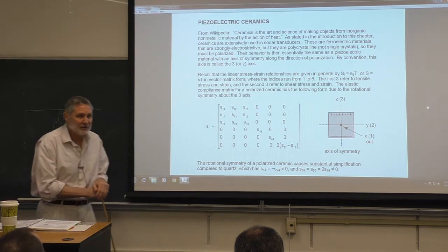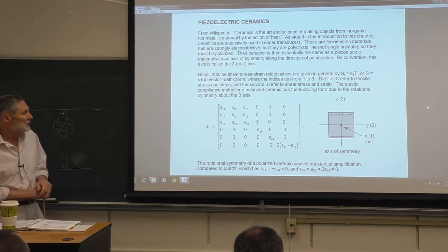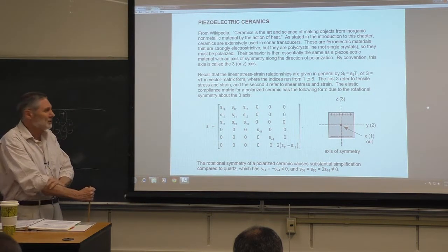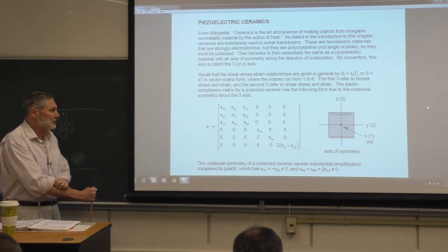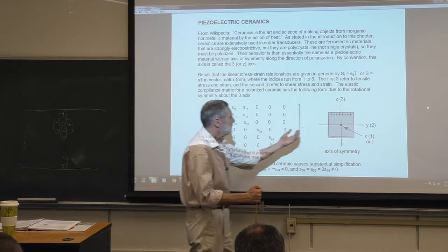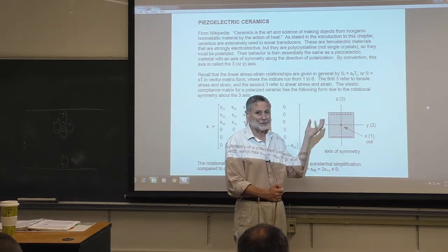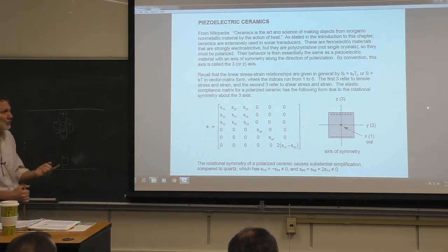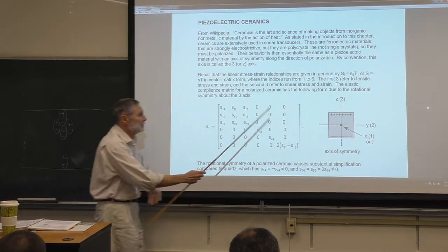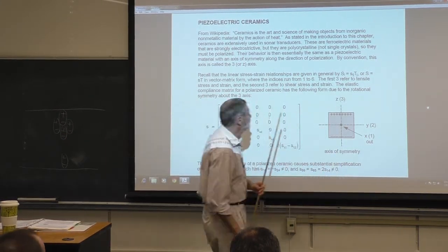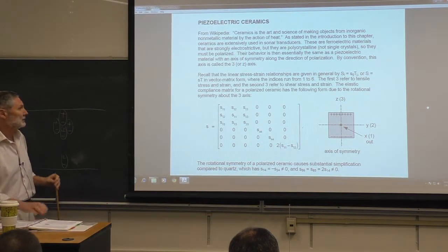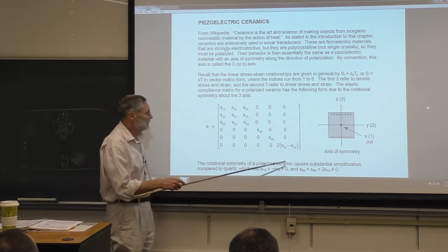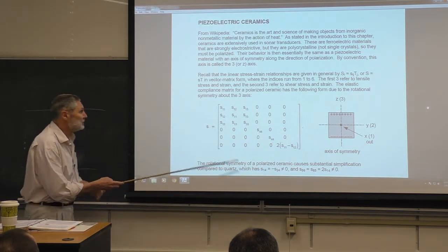Quantitatively, all the information is in these three matrices: the compliance matrix, the permittivity matrix, and the piezoelectric strain matrix coupling. It's important to recognize we have rotational symmetry about the z-axis, because when it's cooked up there's no preferred direction, and then we polarize in one direction giving axial symmetry. This goes a long way in explaining why these matrices have the form that they do.